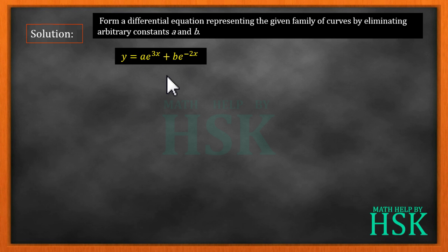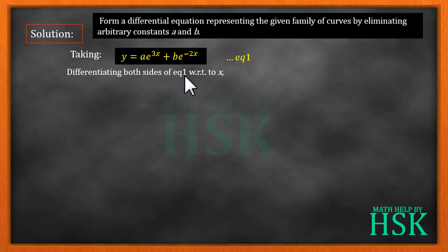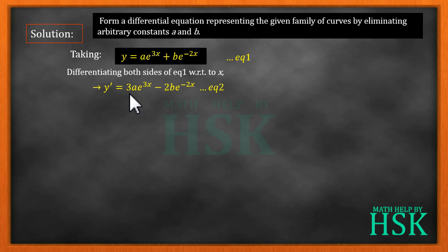We assume this is equation number one. On differentiating both sides of equation one with respect to x, we get y' = 3a·e^(3x) — since the differentiation of e^(3x) is 3e^(3x) — plus b times the differentiation of e^(-2x), which is -2e^(-2x). This gives us equation number two.